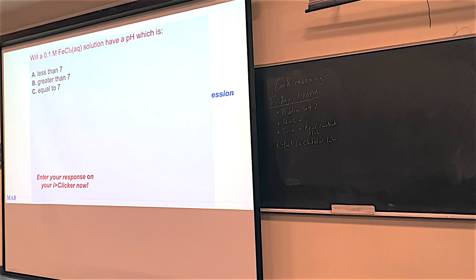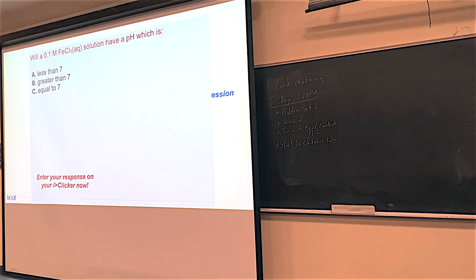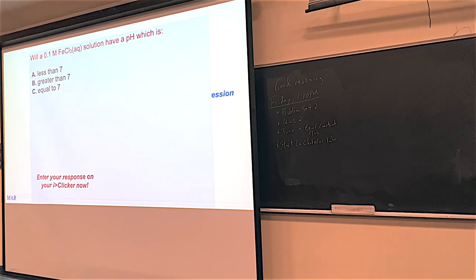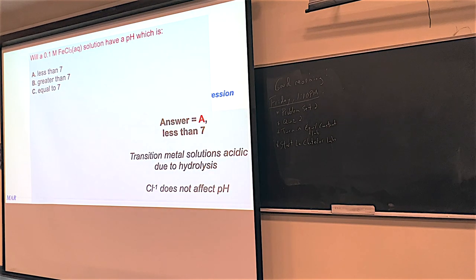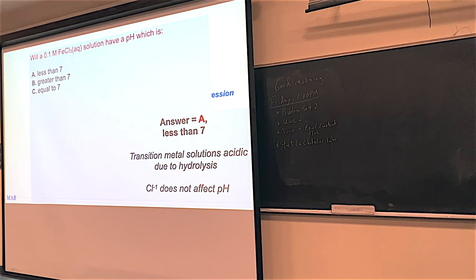Here's an example: you've got a 0.1 molar iron chloride solution in water — what's the pH? Chloride is the conjugate of a strong acid, HCl. Like sodium ions, bromide, nitrate, etc., it's not going to have any effect on pH. So if it were just chloride, we'd say pH 7. But iron is a transition metal, and transition metals make solutions a little bit acidic. So the pH will be less than 7. You just need to know that transition metals make a little bit of acid — they'll be a little bit acidic.